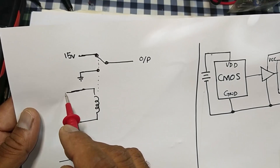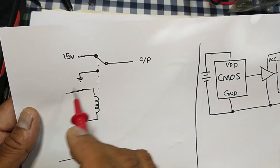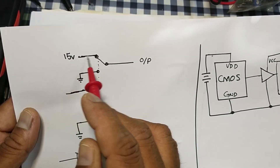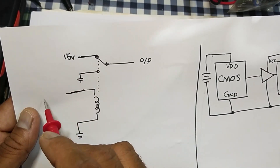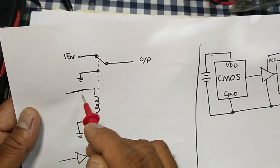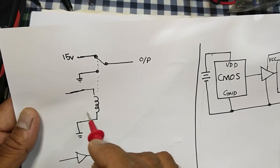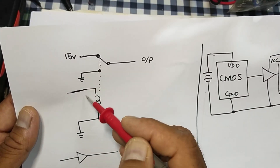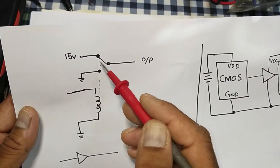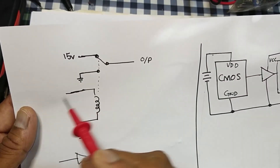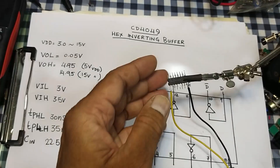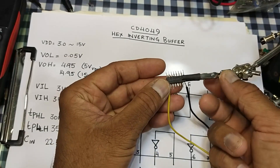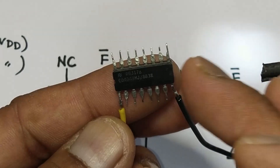At no input we are taking output; at the input pin we are taking low output. So this high and low behavior is called the invert function. This IC is a 16-pin IC.